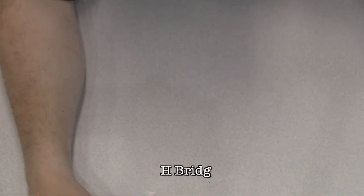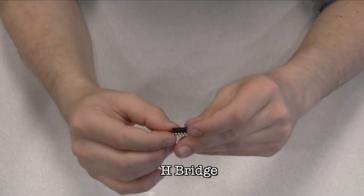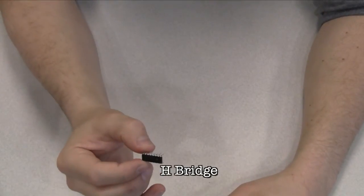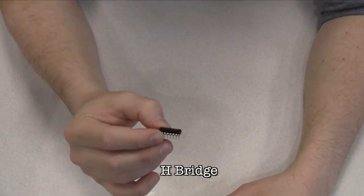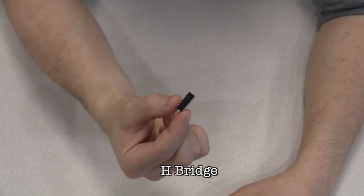The H-bridge is a circuit that allows you to control the polarity of the voltage applied to a load, usually a motor. The H-bridge here is an integrated circuit, but it could also be constructed with a number of discrete components.